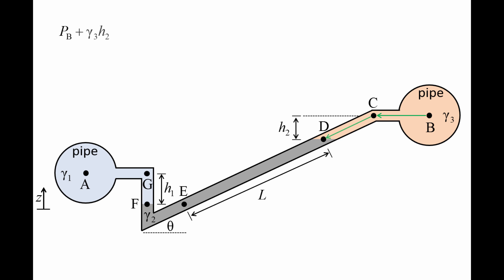Moving from point C to point D, the pressure increases by gamma 3 times the vertical distance h2. Notice that the distance between points C and D is longer than h2, but pressure only varies in the vertical direction.